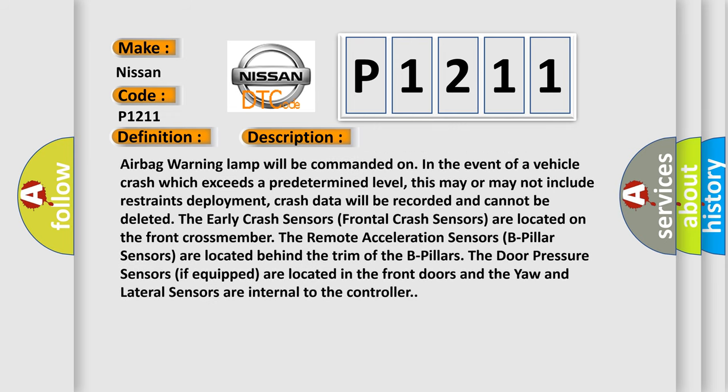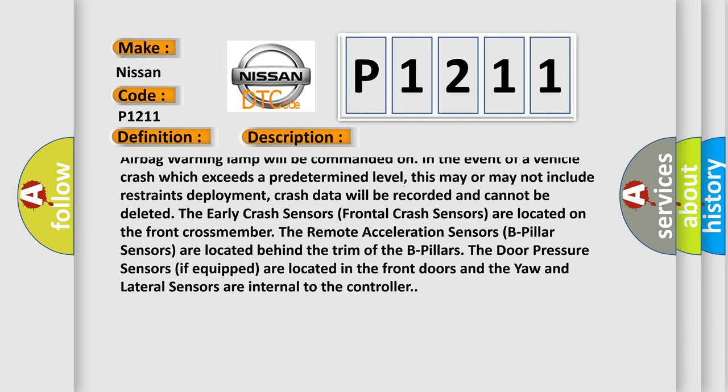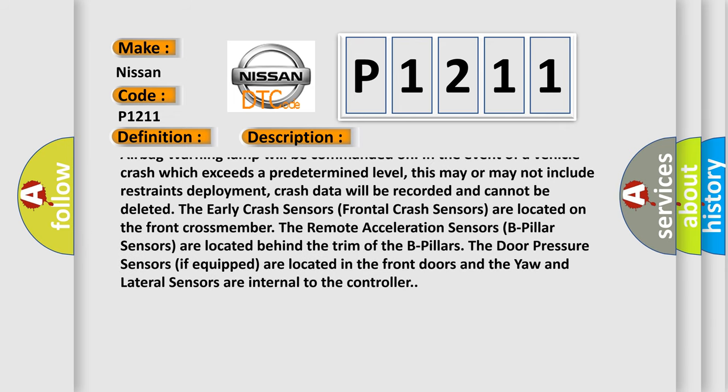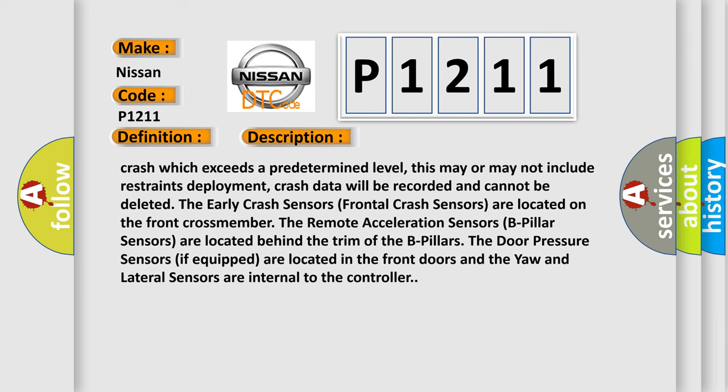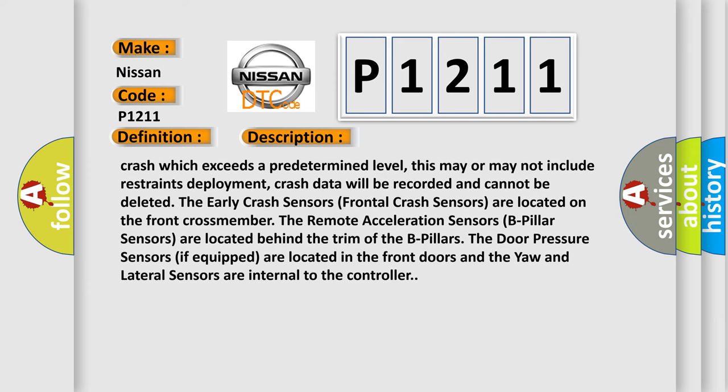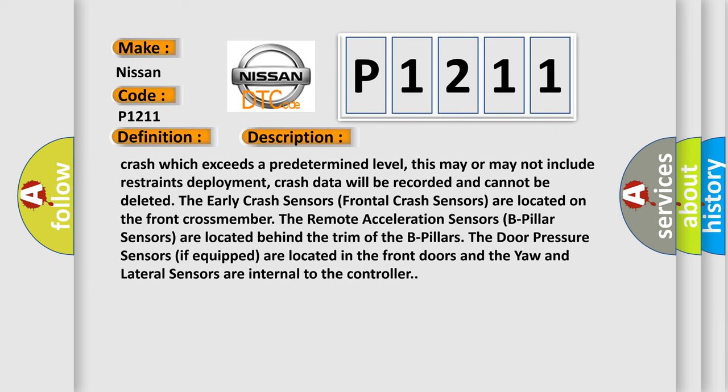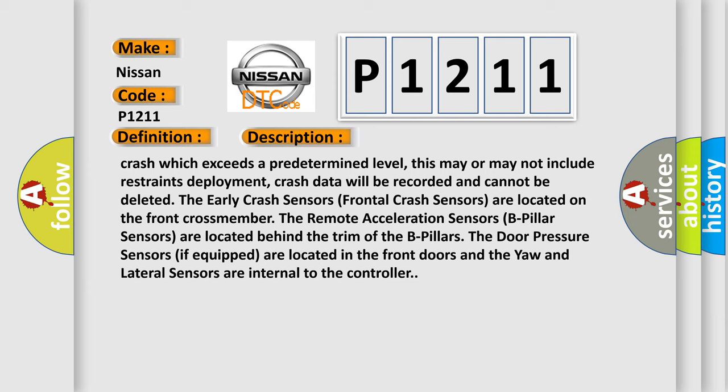The early crash sensors, frontal crash sensors are located on the front crossmember. The remote acceleration sensors, B-pillar sensors are located behind the trim of the B-pillars. The door pressure sensors, if equipped, are located in the front doors and the yaw and lateral sensors are internal to the controller. This diagnostic error occurs most often in these cases.